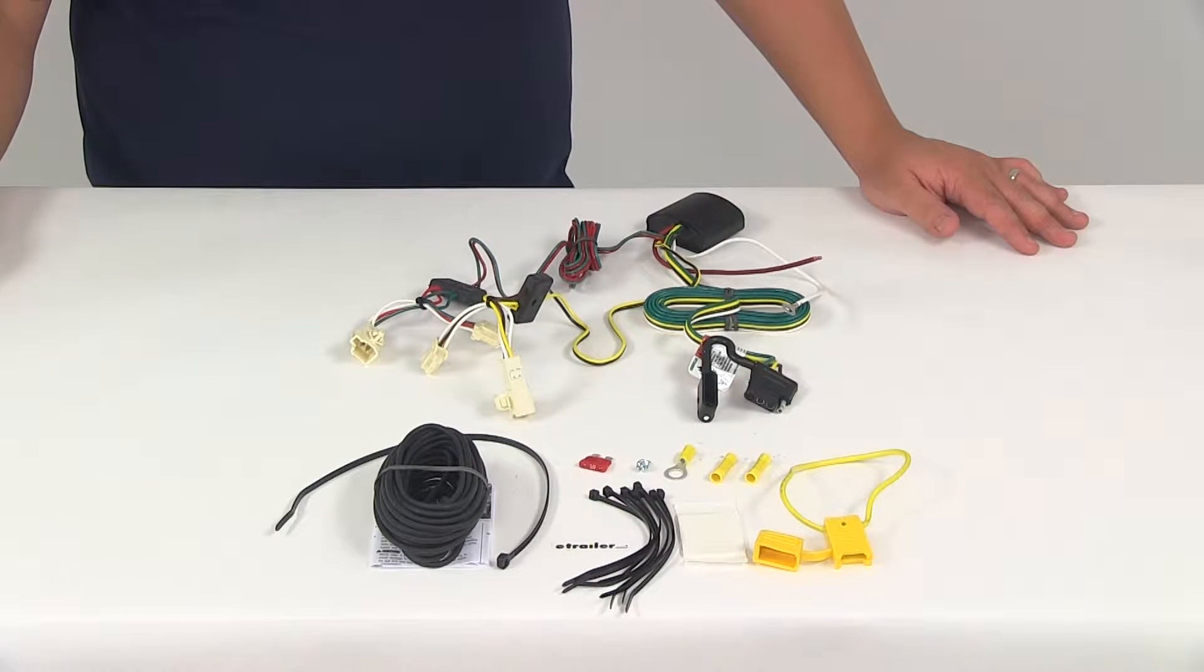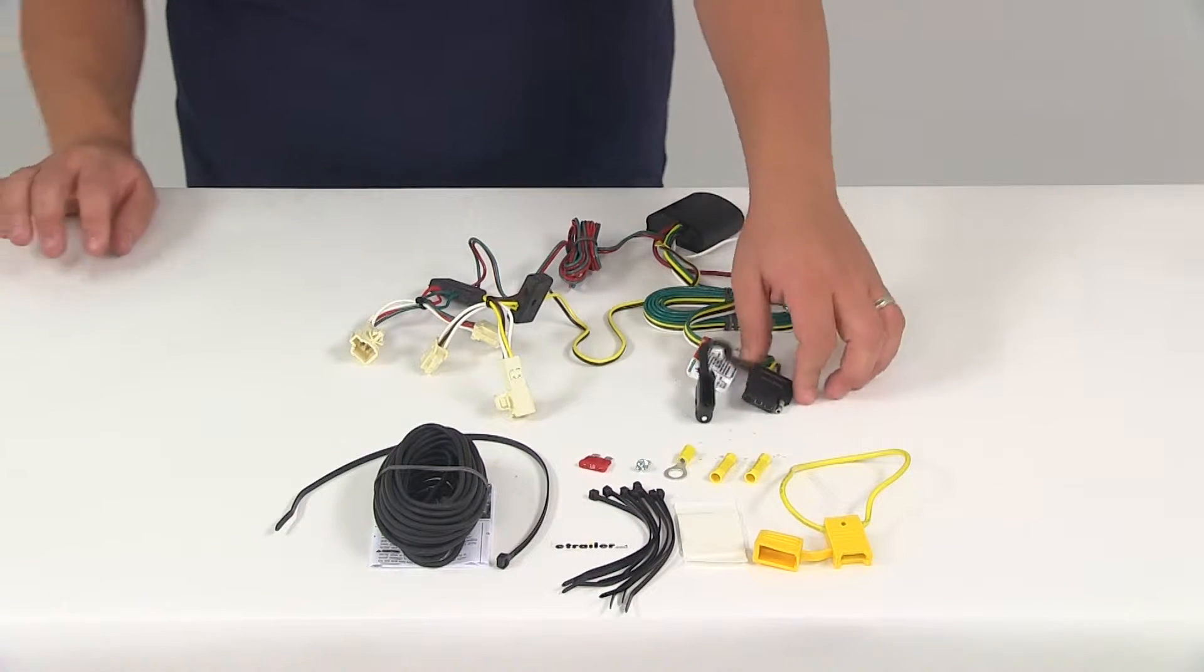Today we're going to be taking a look at part number 118482. This is the T1 vehicle wiring harness with a four-pole flat trailer connector.